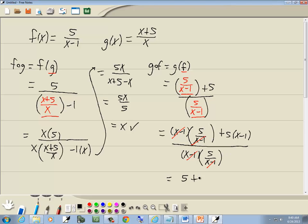5 plus 5 times x is 5x. 5 times negative 1 is negative 5 over 5. Well, 5 minus 5 cancels up on top. So we've got 5x over 5. And then those 5's cancel and gives us x.